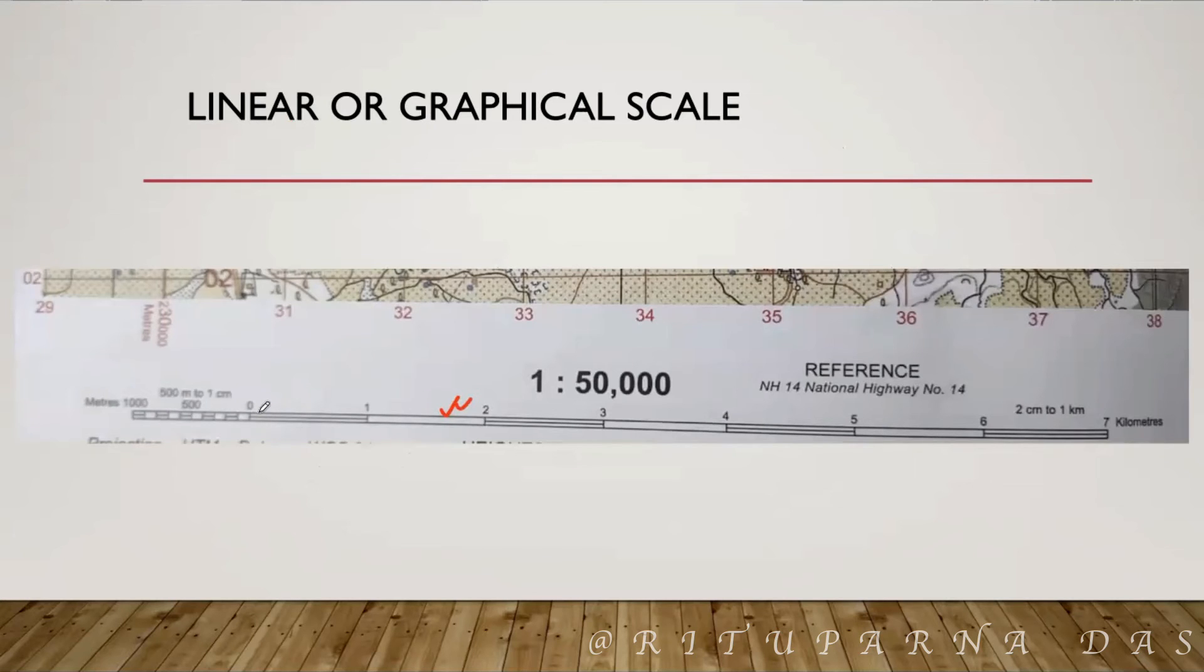Now, there are two divisions. One is primary divisions. This is my primary divisions. What we have to do? We have to measure the distance from this point to this point or this point to this point because both will be same. You can take any of the distance. After measuring any of them, you will get 2 cm. Now, what you have to do? You have to see the interval.